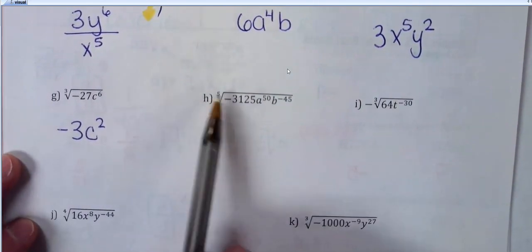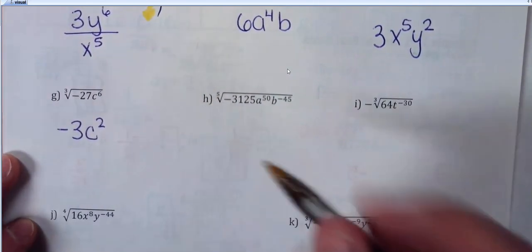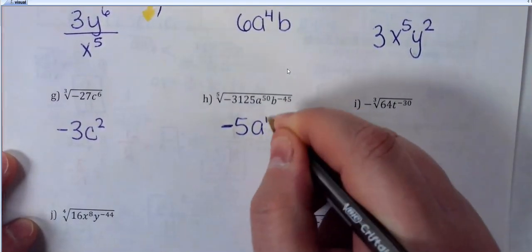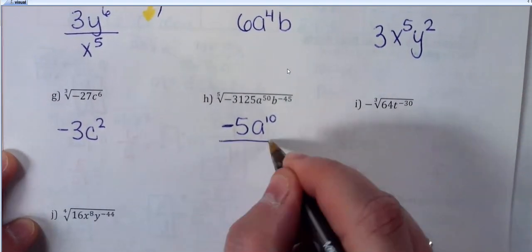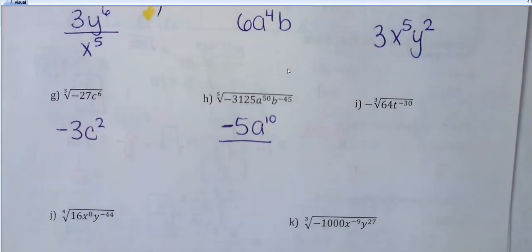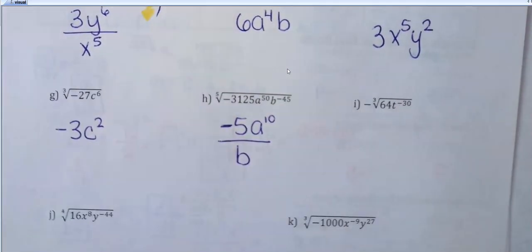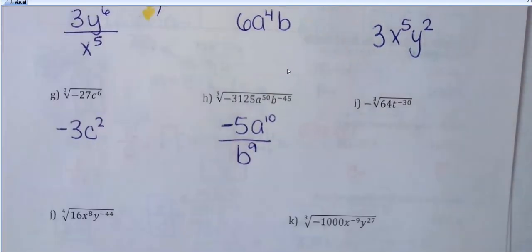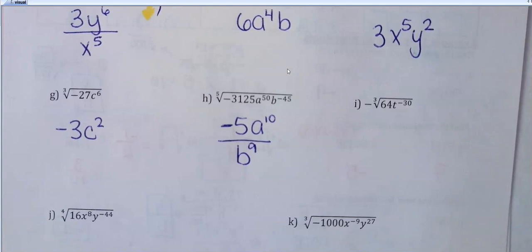The fifth root of negative 3125 is going to be negative 5. For the odd root of a negative number: a is going to have an exponent of 10 divided by 5, which is 2. But b has a negative exponent, so I'm just going to put this in the bottom of the fraction to get rid of that negative exponent — 45 divided by 5 gives you 9. And again, don't move the negative 5 to the bottom — that's a negative number, not a negative exponent. Only when the exponent is negative do you move it to the bottom.